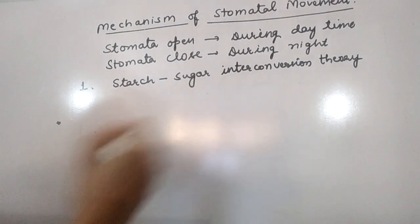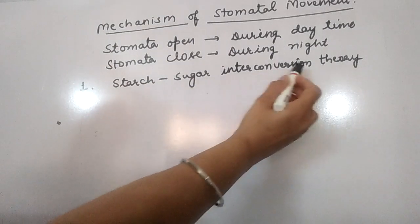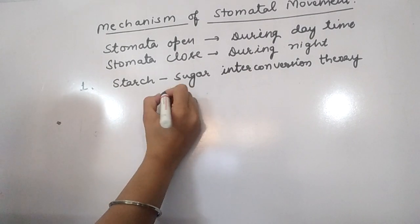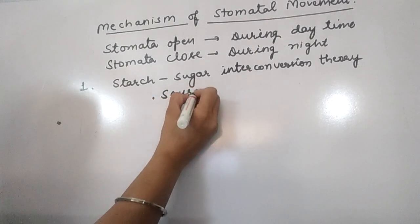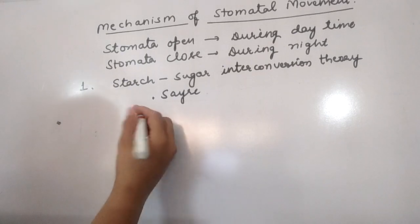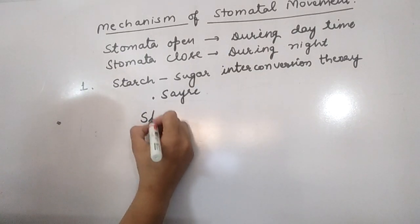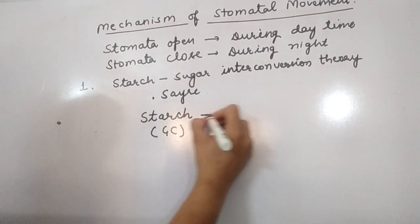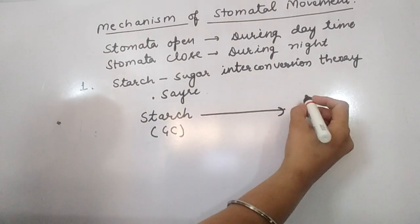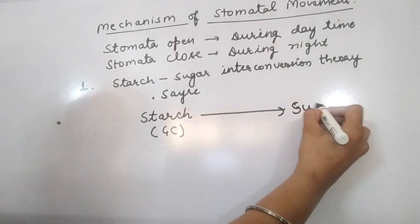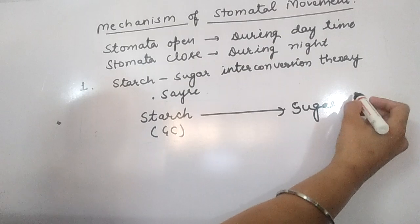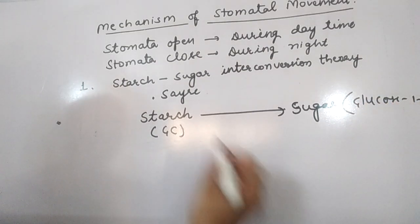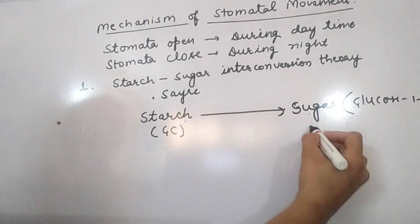Various theories are given regarding stomatal movement. The first is the Starch-Sugar Interconversion Theory. This theory was proposed by Sayre. According to Sayre, starch is present in guard cells. During daytime, starch converts into sugar in the form of glucose-1-phosphate.